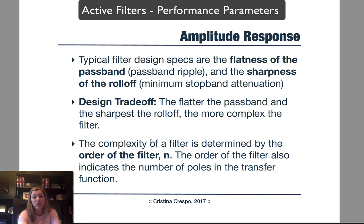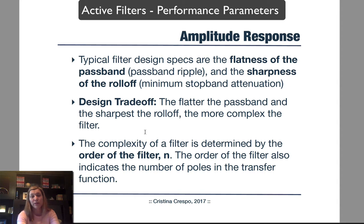Based on these characteristics, we typically define filter specifications and assess filter performance. Typical filter design specifications are the flatness of the passband, given as a minimum amount of passband ripple, and the sharpness of the roll-off, expressed as the minimum stopband attenuation. There is a design trade-off between those two: typically the flatter the passband and the sharper the roll-off, the more complex the filter. We want to find a filter that is as simple as possible while still achieving our desired specifications.